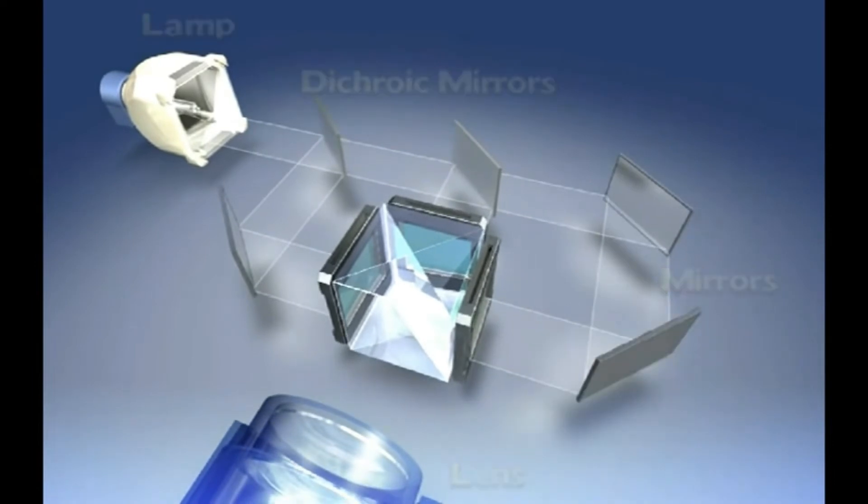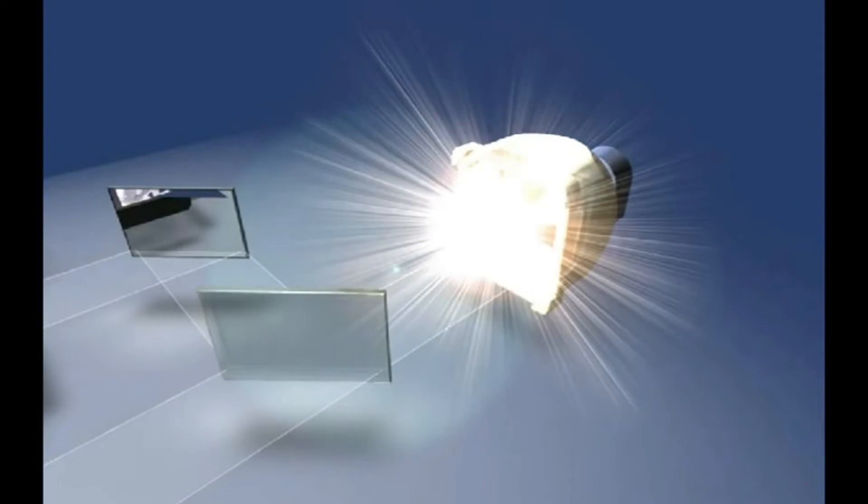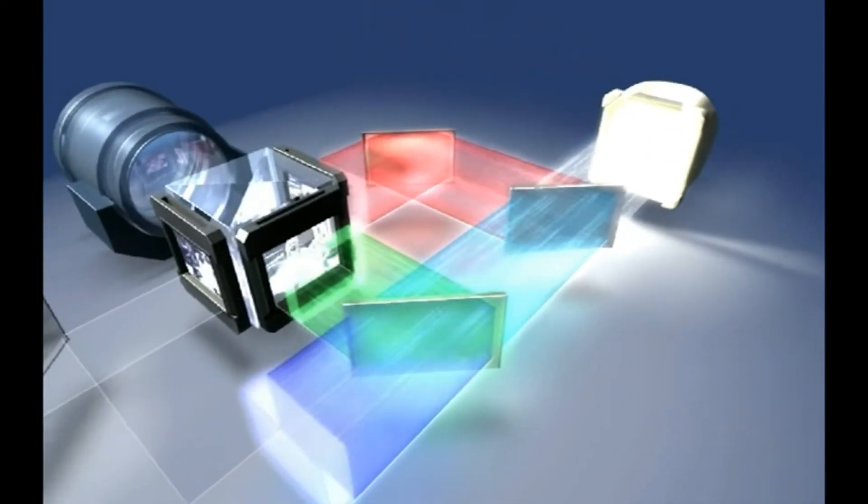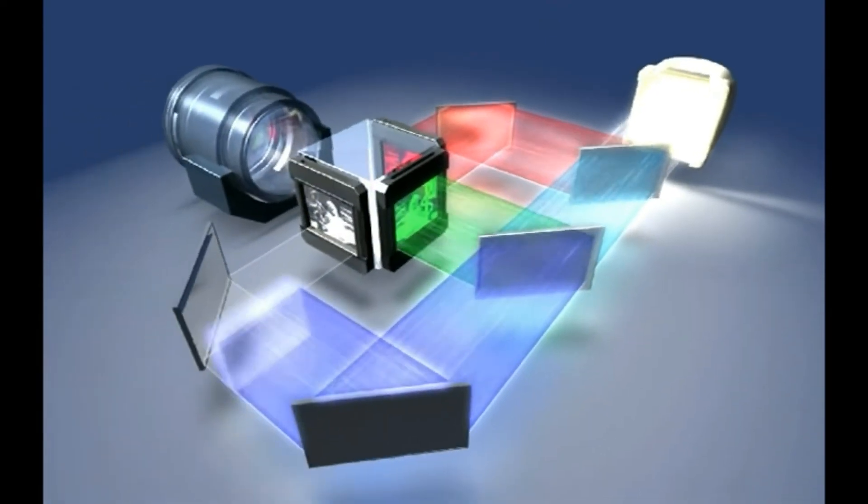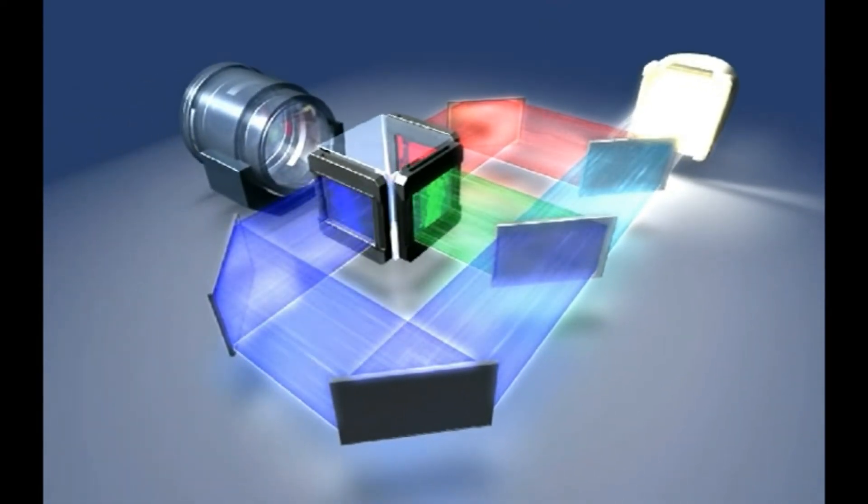Dichroic mirrors are special optics that reflect certain colors while allowing other colors to pass through. For example, first red light is reflected towards the red LCD. Green and blue light easily passes through this first dichroic mirror.